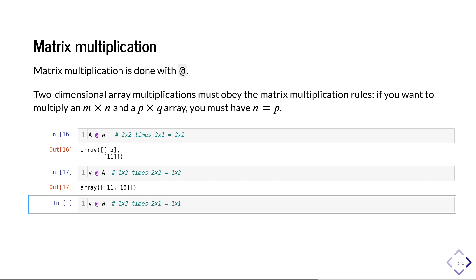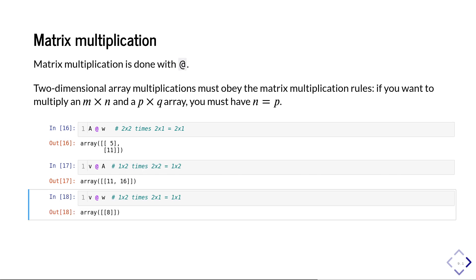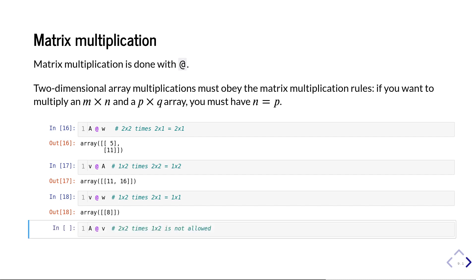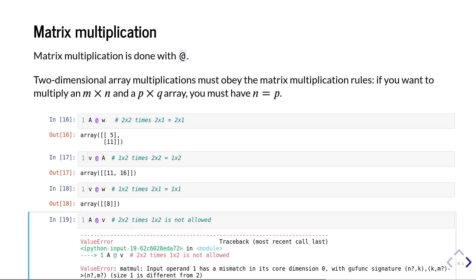We can also do a dot product — multiplying a 1 by 2 row vector with a 2 by 1 column vector gives a 1 by 1 array containing the number 8. Finally, if we try to multiply A (2 by 2) by v (1 by 2) in the wrong order, NumPy throws an error: 'input operand has a mismatch in its core dimension.' This tells you the matrix dimensions are incompatible — you can't multiply a 2 by 2 matrix into a 1 by 2 row vector.